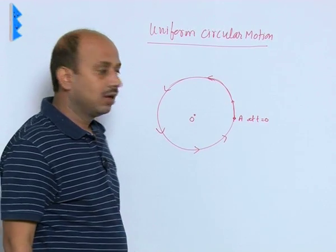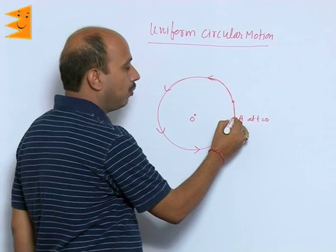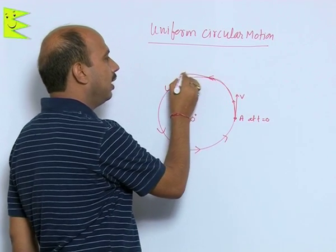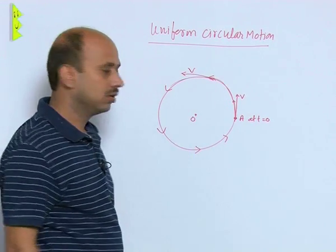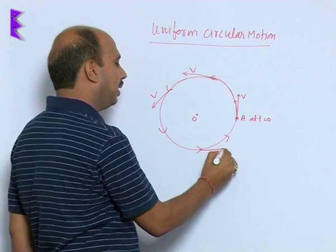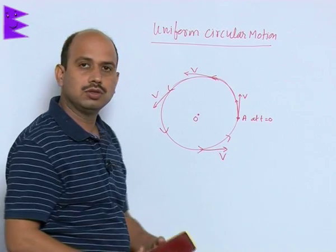The circular path everywhere you will find when the body is here direction of velocity is like this, when the body is here direction of velocity is like this, when the body is here direction of velocity is here. So, every time direction of velocity keeps on changing.